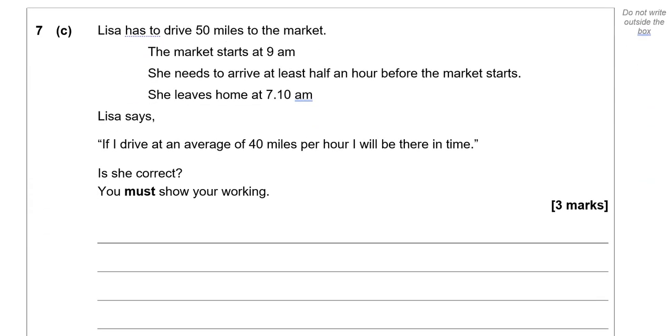Lisa has to drive 50 miles to the market. The market starts at 9am. She needs to arrive at least half an hour before the market starts. She leaves home at 7.10am. Lisa says, if I drive at an average of 40 miles per hour, I'll be there in time. Is she correct? So if she leaves home at 7.10am,